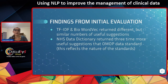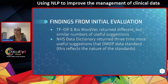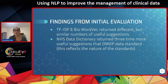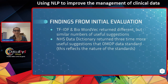When I compared the two methods, TF-IDF and BioWordVec, each returned different suggestions but both returned a similar number of useful suggestions — there wasn't one that exceeded the other by any measure. When I looked at the standards, the data dictionary from the National Health Service returned about three times more useful suggestions than the OMOP data standard, and I think that reflects the fact that the NHS data dictionary is a lot more prescriptive than OMOP, which is more generic in the sorts of data standards it is trying to capture.